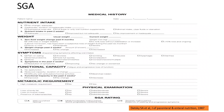The Subjective Global Assessment has various components: it takes into account nutrient intake, weight, symptoms that may lead to decreased food intake, functional capacity, and metabolic requirements. It also incorporates physical examination to assess whether the patient is emaciated and has loss of body weight. Based on these assessments, the patient is graded as SGA-A, B, or C. SGA-A means adequately nourished with no malnutrition; SGA-B indicates moderate malnutrition; and SGA-C means the patient is severely malnourished.